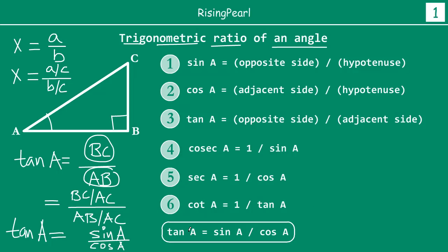This is not really a seventh ratio or anything — we still have only six ratios: sin A, cos A, tan A, cosec A, sec A, and cot A. This is just a relationship that says tan A is actually equal to sin A divided by cos A, as we have just proved. This may come in handy as we look to solve different questions on trigonometric ratios.